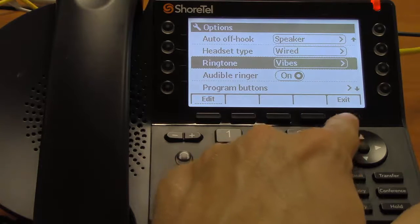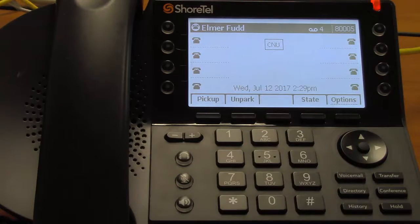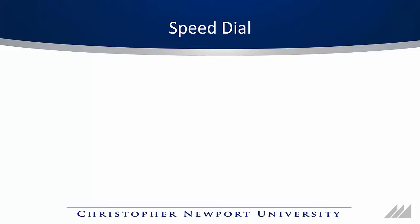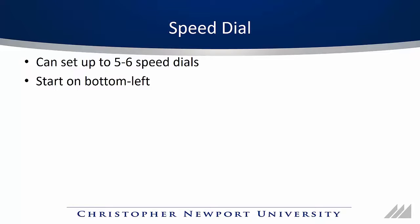Then you can press exit to return to the main screen. Now that we've got our ringtone set up, let's talk about speed dial. You can set up about five to six speed dials depending on how many people you'll have on hold at any given time. You'll want to start those on the bottom left and work your way up and then to the right. The top two to three buttons on the right side are reserved for placing calls on hold and taking them off.